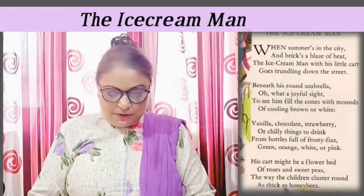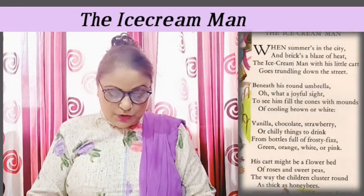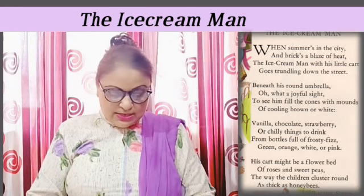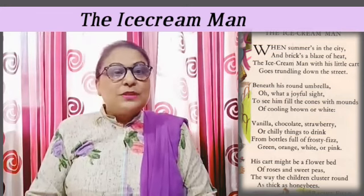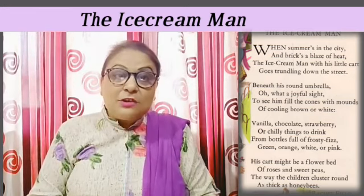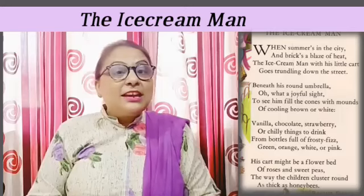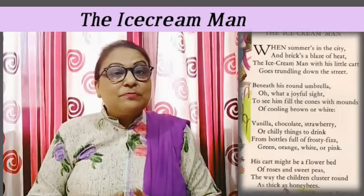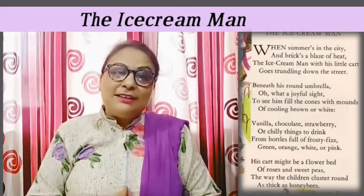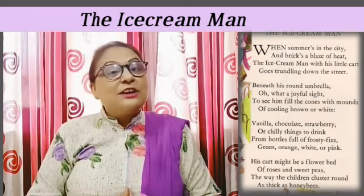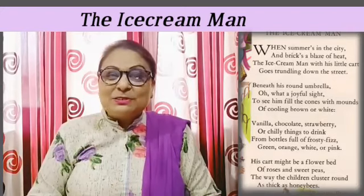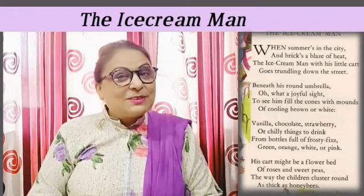His cart might be a flower bed of roses and sweet peas, the way children cluster round is as thick as honeybees. The poet says that the ice cream cart is like a flower bed of flowers because it is so colorful and attractive.